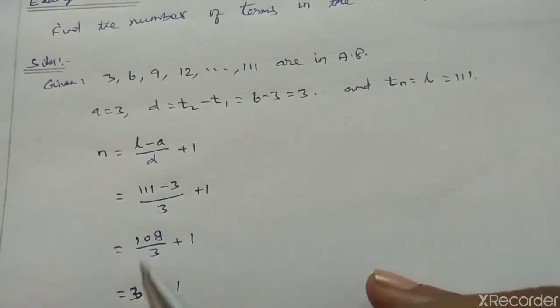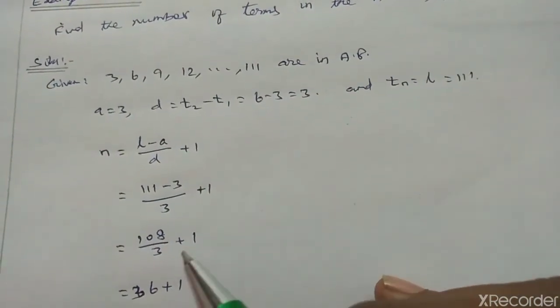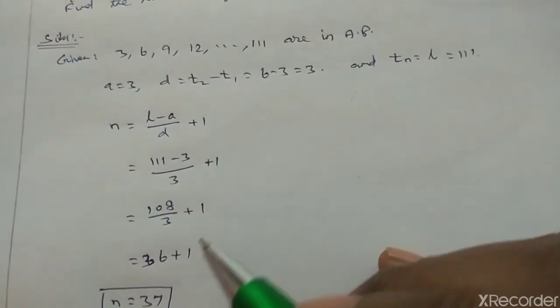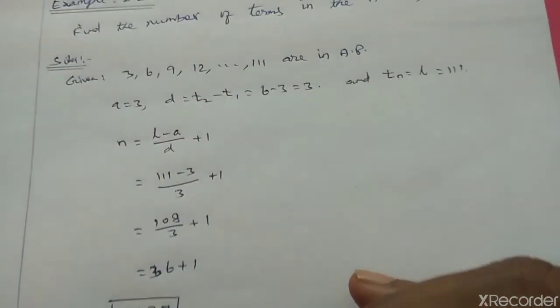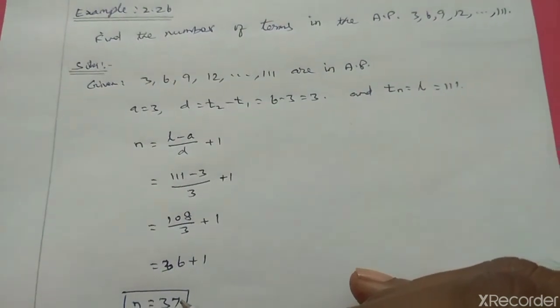108 divided by 3: 3 threes are 9, remaining 18. 6 threes are 18, so 36 plus 1 equals 37. Therefore, the number of terms equals 37.